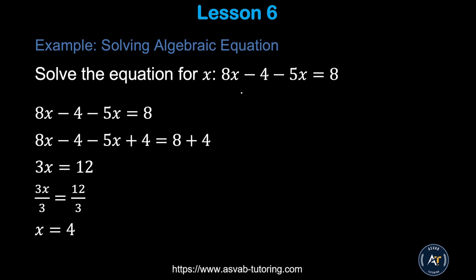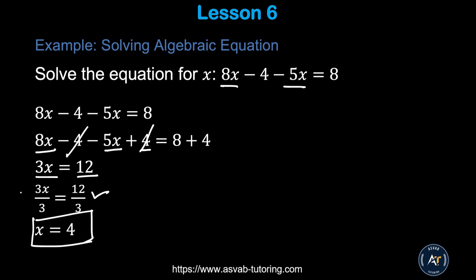Next, solve an equation with multiple variable terms. First simplify: combine 8x and 5x to get 3x. Then eliminate the constant by adding 4 to both sides — the −4 cancels out — giving 3x = 12. Divide both sides by 3 to get x = 4. The key concept is always using the opposite operation to eliminate a term.